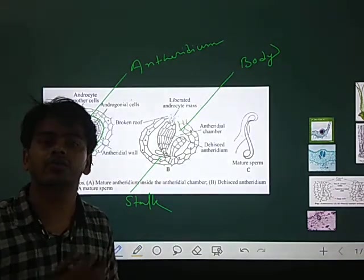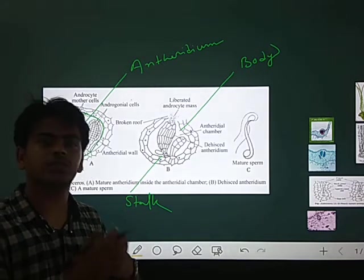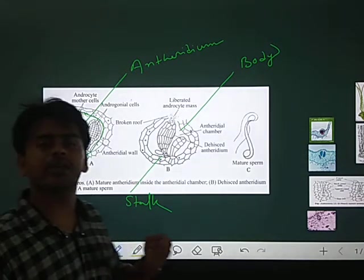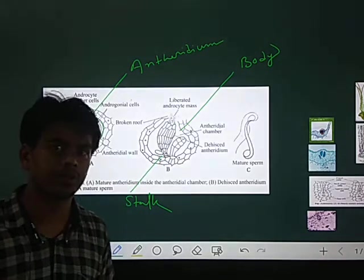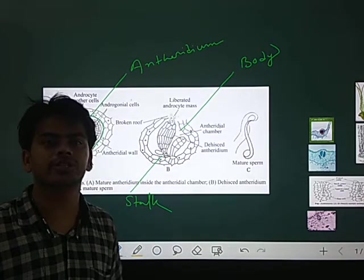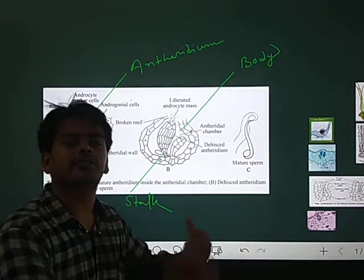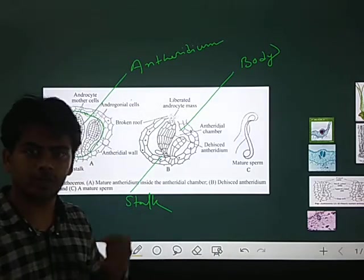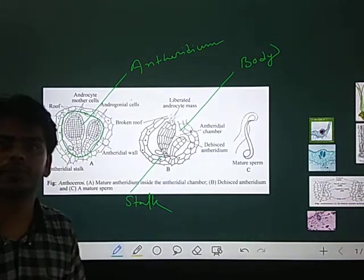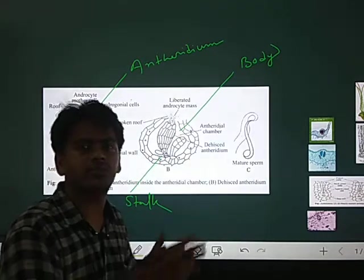This jacket encloses the andtherozoid mother cells. The andtherozoid mother cells either directly convert into antherozoids or sometimes participate in division to form antherozoids.